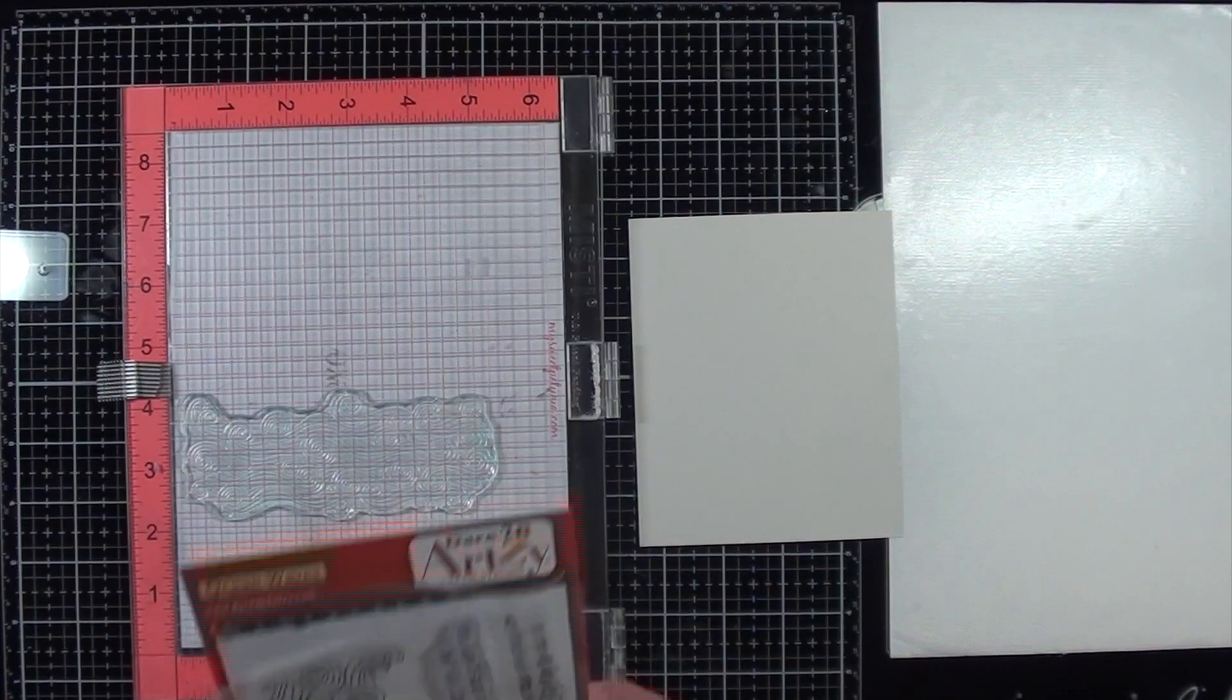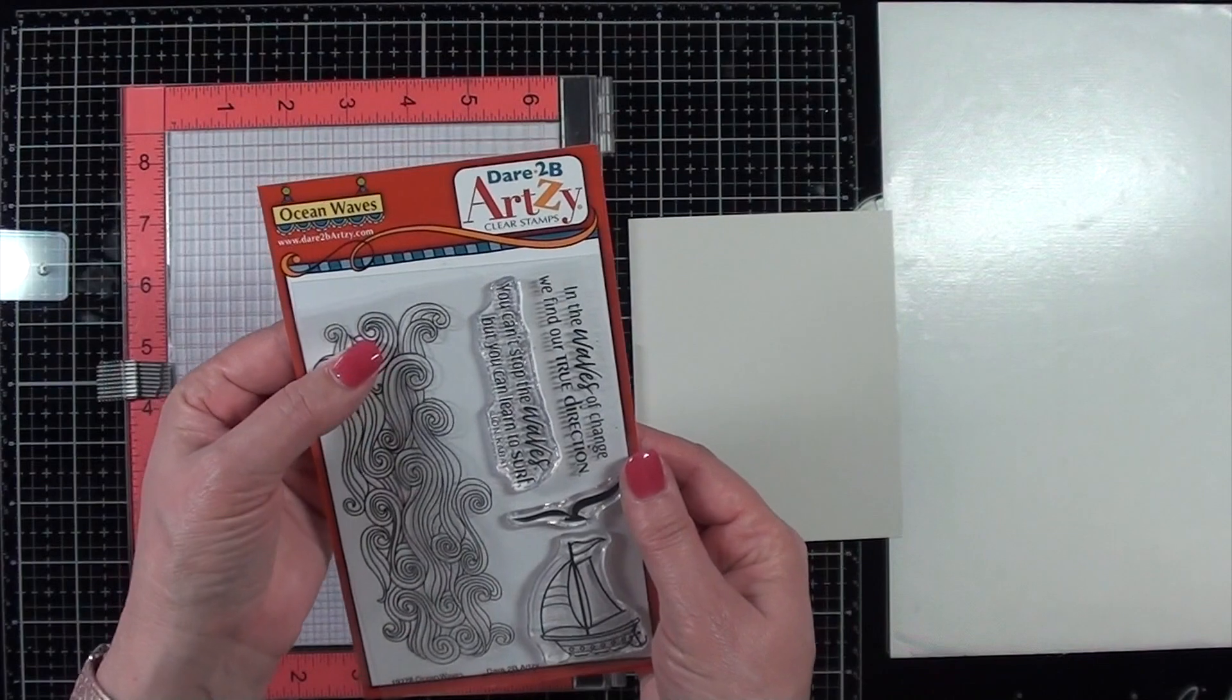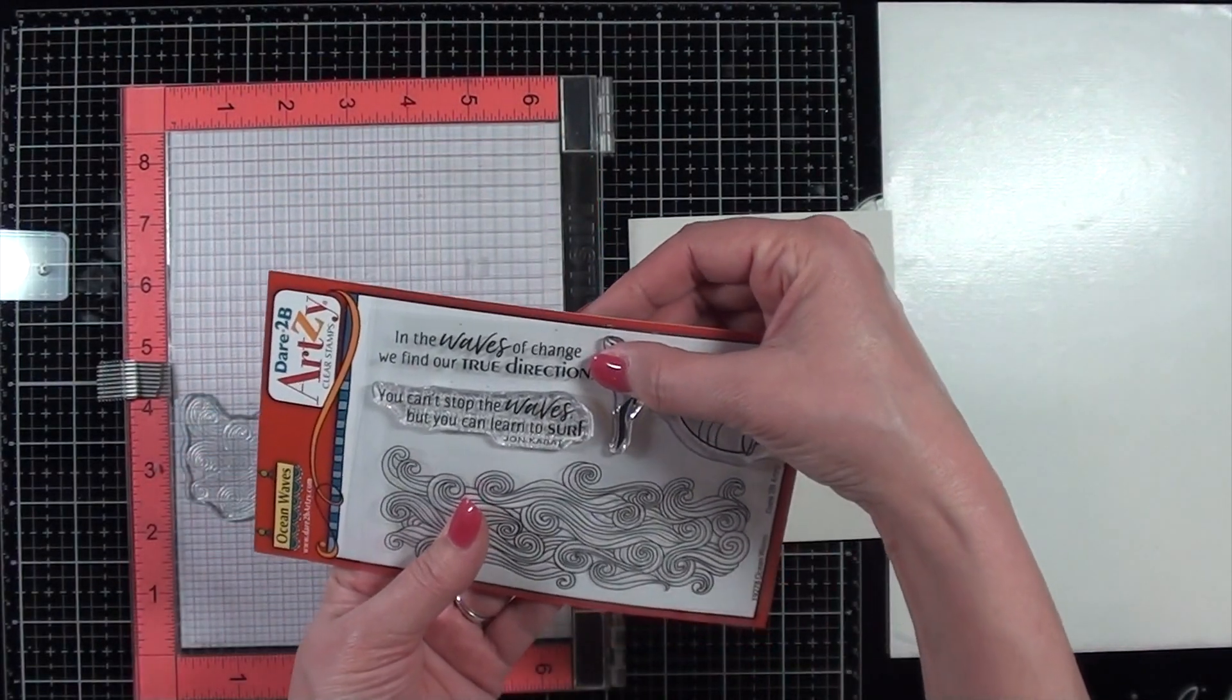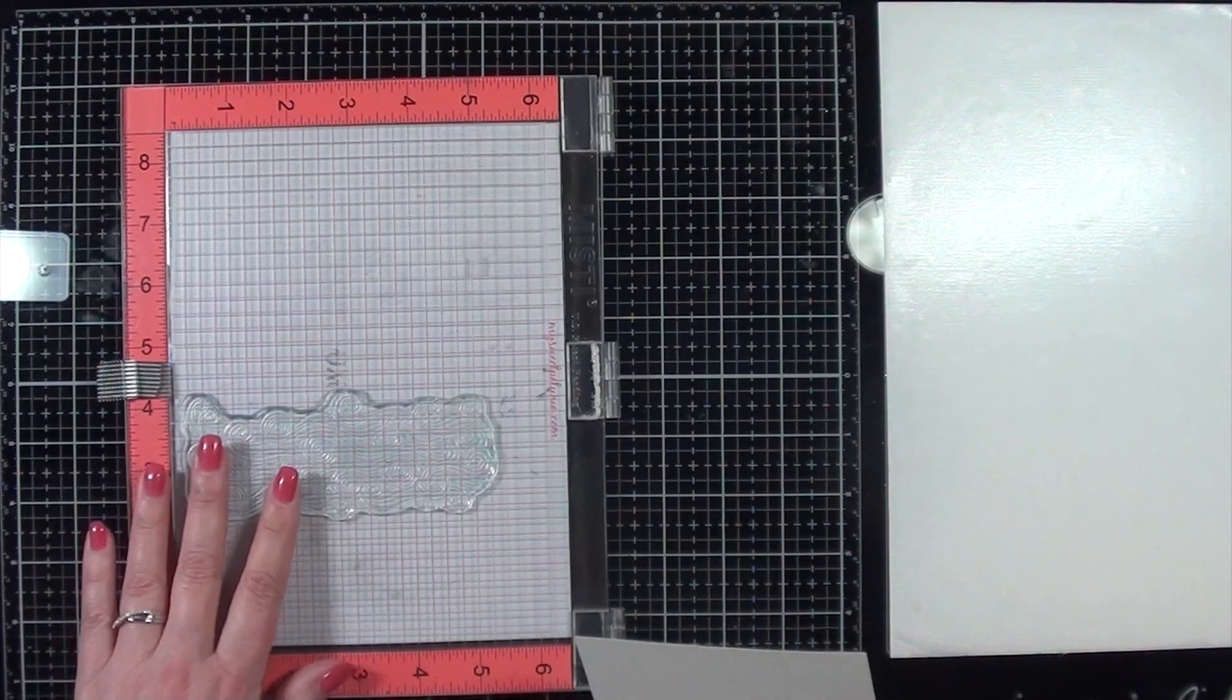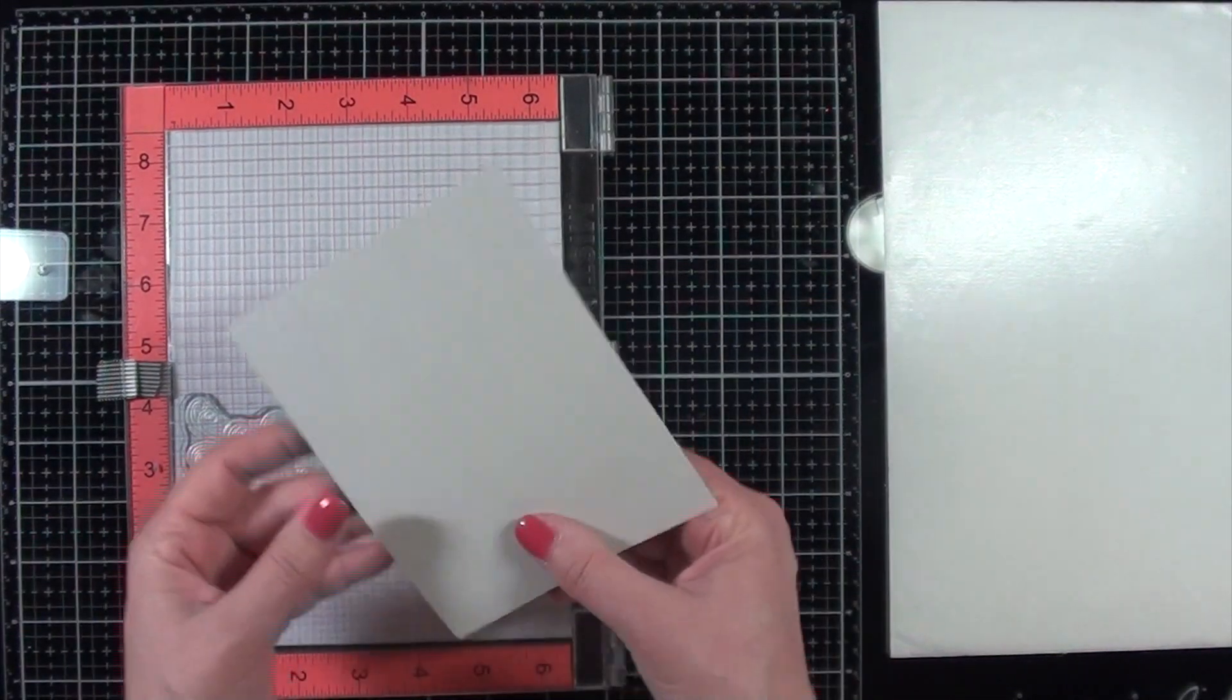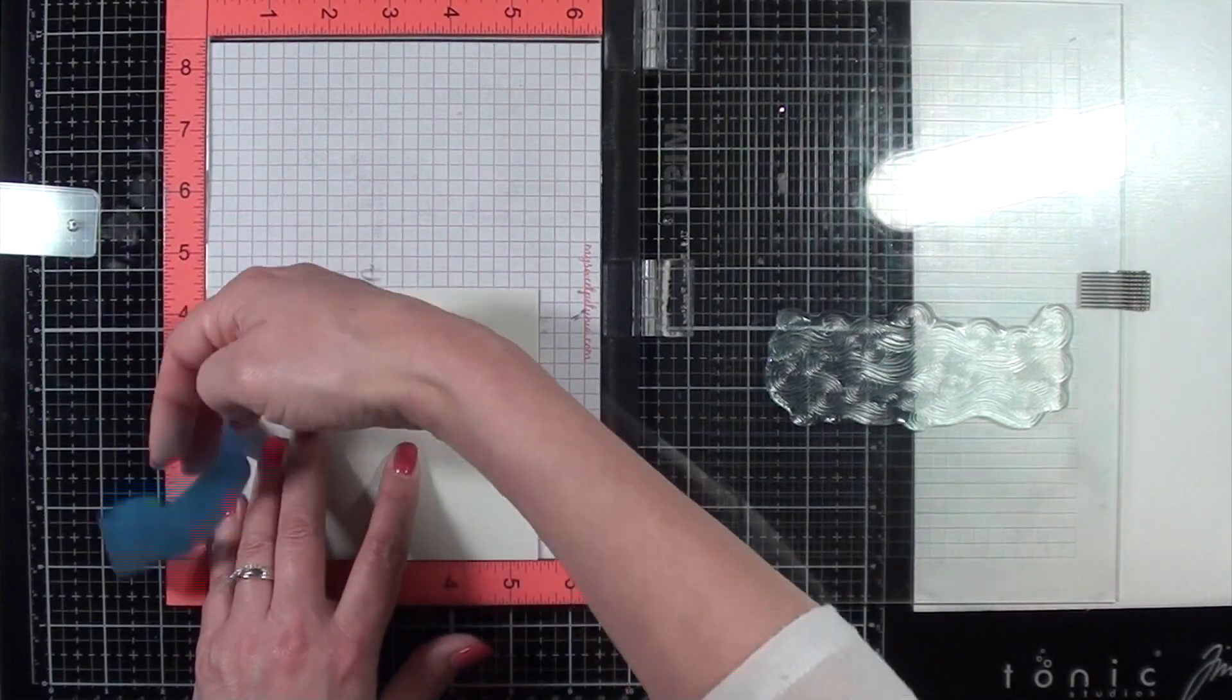And to get started, I'm going to be using this Dare to be Artsy stamp set. It's called Ocean Waves. I will be using one sentiment as well as the waves out of this stamp set today. And as you can see, I already have the stamp set up in my MISTI ready to go.